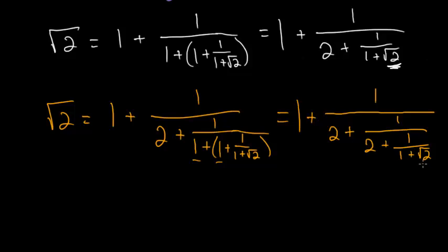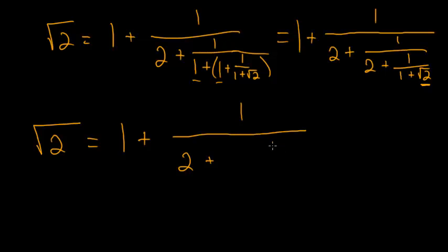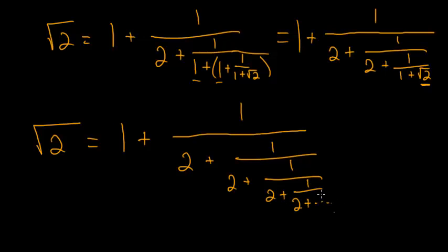If we do it again, substituting this expression for the square root of 2, down here we'd end up with 2 plus 1 over 1 plus root 2. From this we can write the general expression: the square root of 2 is equal to 1 plus 1 divided by 2 plus 1 divided by 2 plus 1 divided by 2 plus, and this just keeps going on forever.